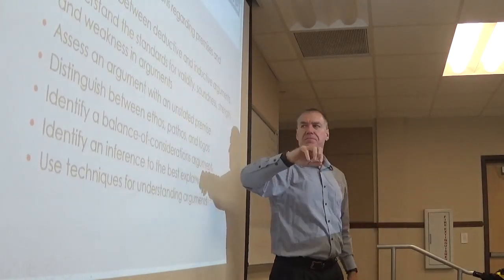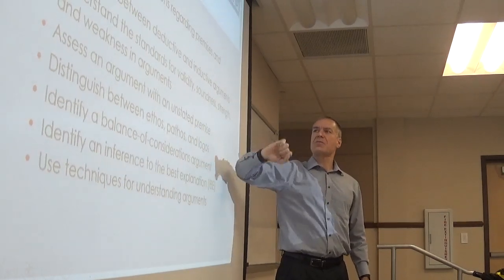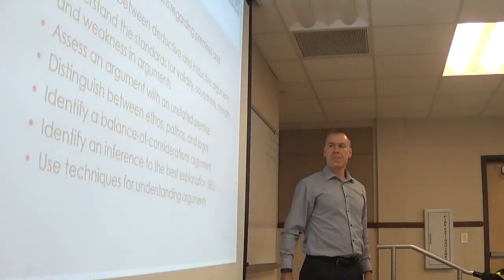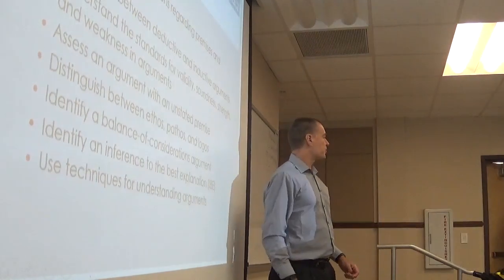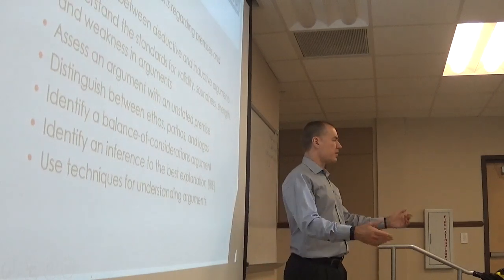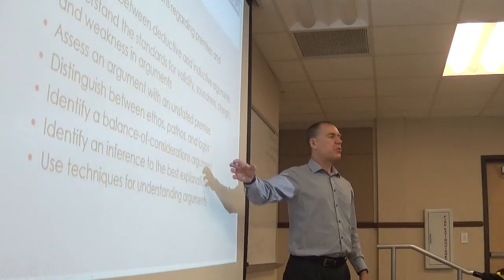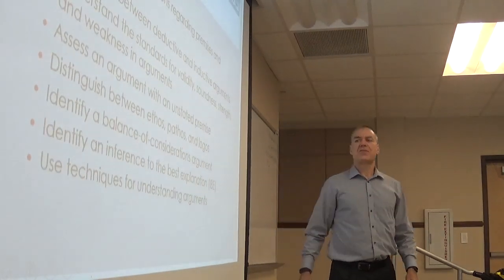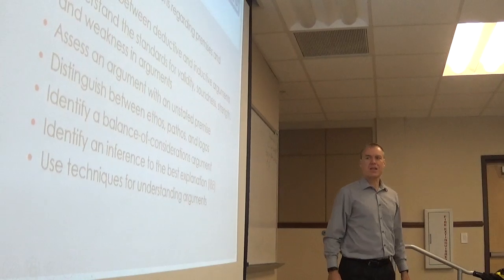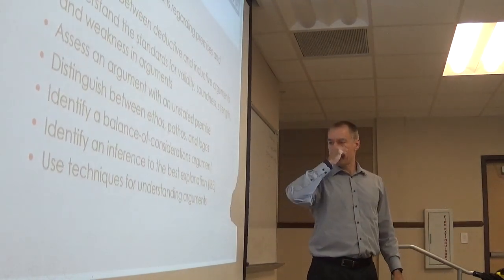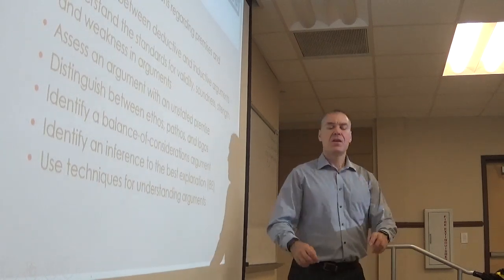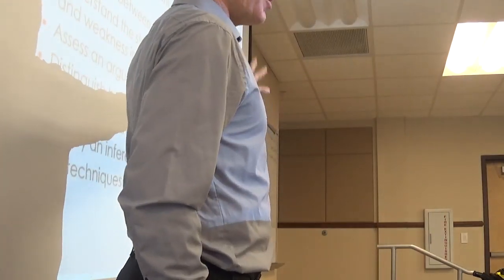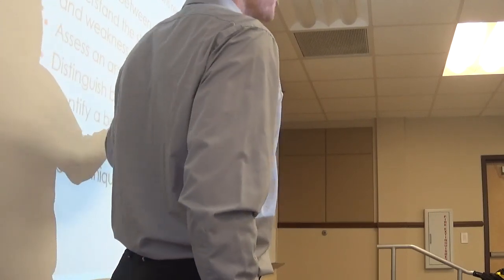In the case of deductive arguments, they're valid or invalid, sound or unsound. In the case of inductive arguments, they are strong or weak. We'll also look at arguments that have missing pieces — arguments can be missing a premise, a conclusion, or multiple premises. Then we'll look at ethos, pathos, and logos; the balance of consideration argument; inference to the best explanation, or IBE; and then more about understanding arguments. Chapter 2 is our lead-in to arguments, both inductive and deductive, before we proceed to inductive reasoning in Part 3 and deductive logic in Part 4.